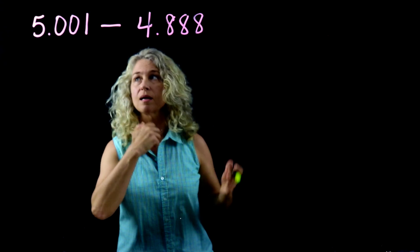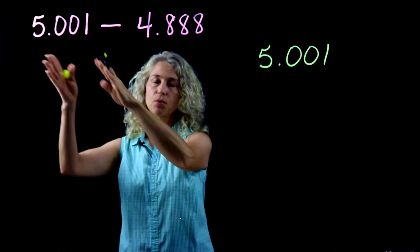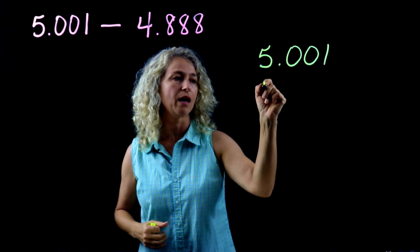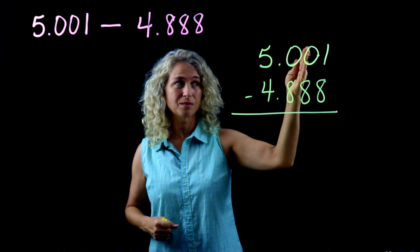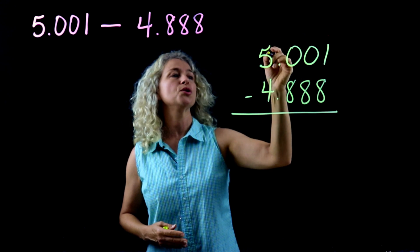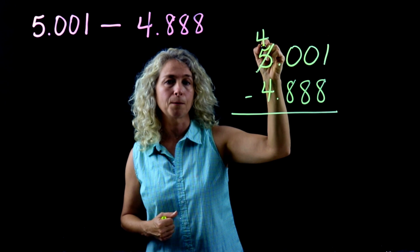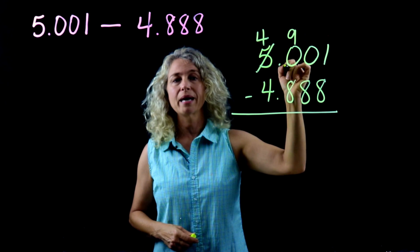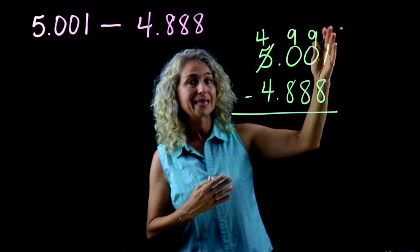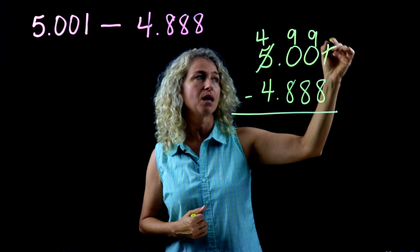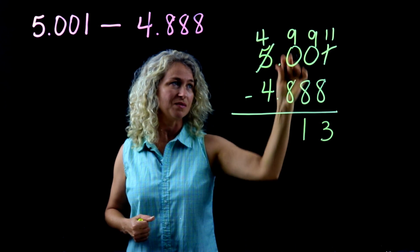Here's our next example. Rewrite it vertically, making sure decimals are lined up — your first number is always on top because it has the greatest value. You cannot take eight from one, so borrow. Go all the way to the ones place; the five becomes a four. Zeros become nines as you cross them. Ten plus one is eleven, and eleven minus eight is three. Nine minus eight is one. Nine minus eight is one. Four minus four is zero.